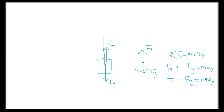If I'm accelerating the bucket upward, I plug in a positive value for acceleration. If the problem says I'm accelerating downward, because I'm using a negative sign for downward vectors, I plug in a negative number for acceleration — for example, negative 2 meters per second squared. Mass will never be positive or negative.